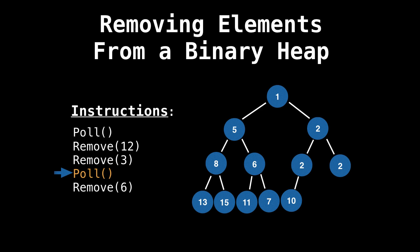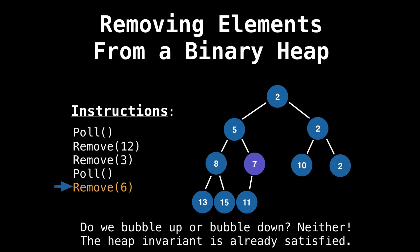Now we want to poll. So mark the root node red, swap it, remove the one. And now we would want to bubble down. And the heap invariant is satisfied. Now we want to remove six. So search for six in our tree. Okay, we have found six. And do the swap, remove six. Now do we bubble up or bubble down? The answer is neither. The heap invariant is already satisfied. So we don't even need to touch our node. We got lucky.